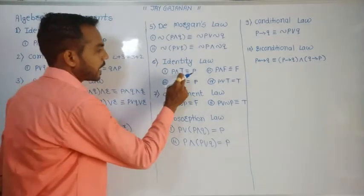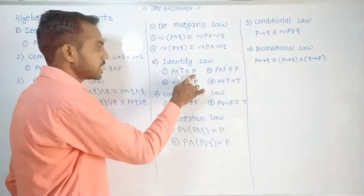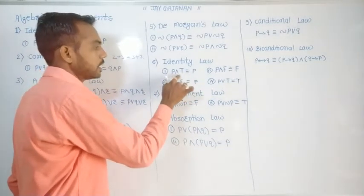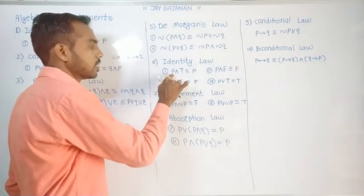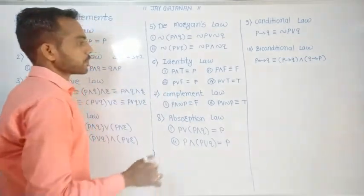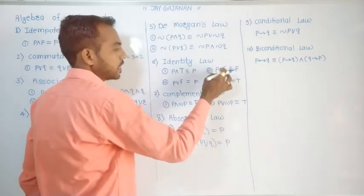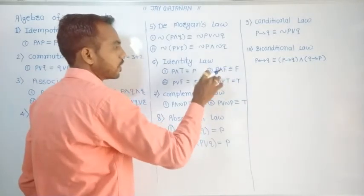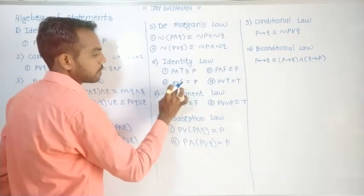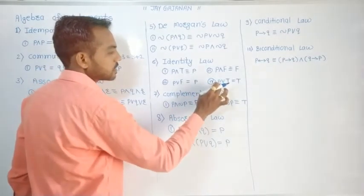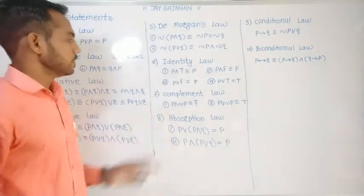Now the identity law: P and T equals P — a statement AND true equals the statement, so the result depends on the statement. P and F equals F — a statement AND false equals false, regardless of whether P is true or false. P or F equals P, and P or T equals T.